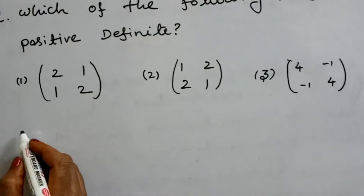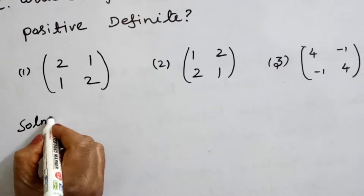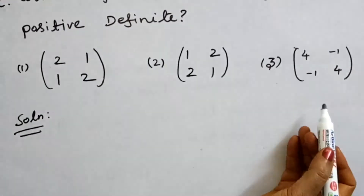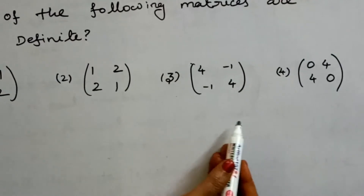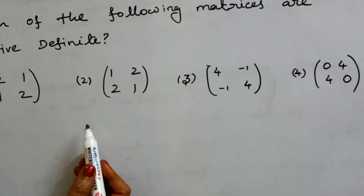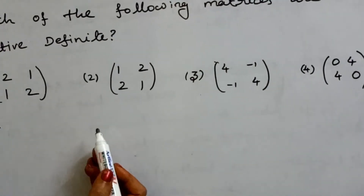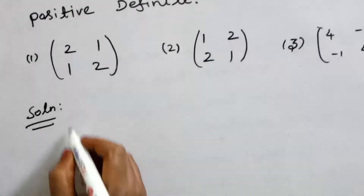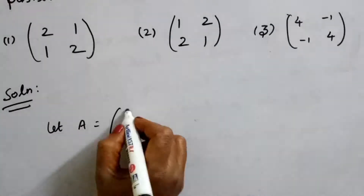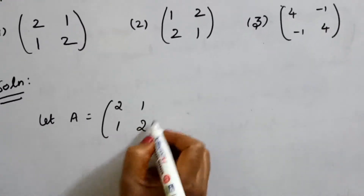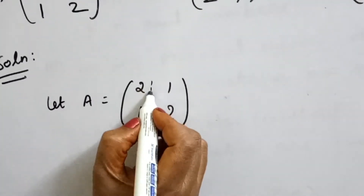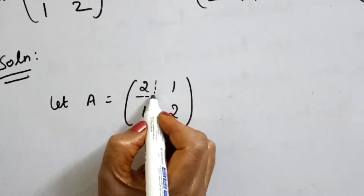Now we will discuss the solution. The given matrix options are symmetric matrices. The first matrix is: let A = [[2, 1], [1, 2]]. The leading principal minor of order 1 is the top-left corner element of the matrix.